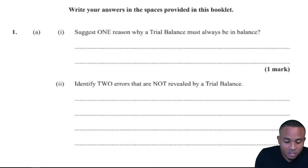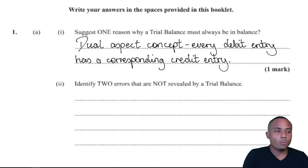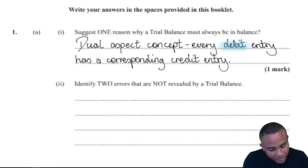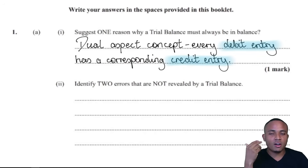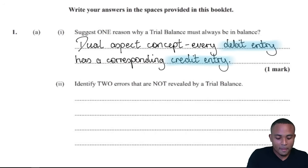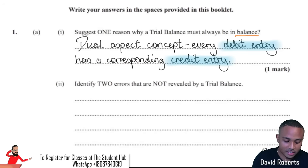Question 1a suggests one reason why a trial balance must always be in balance. One reason why a trial balance must balance is because of the dual aspect concept, which states that for every debit entry there is always a credit entry. So if we enter a debit of 200, there must be a credit entry of 200, and vice versa. Therefore, the trial balance must always balance.